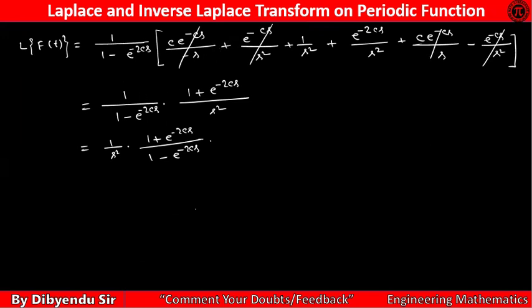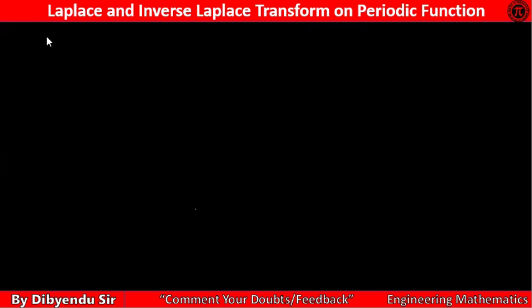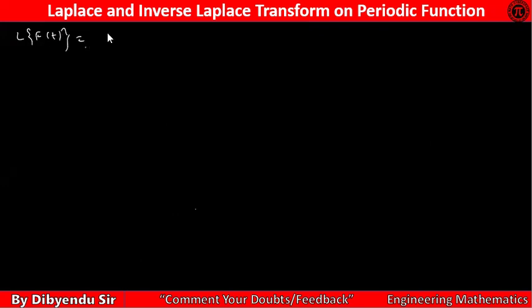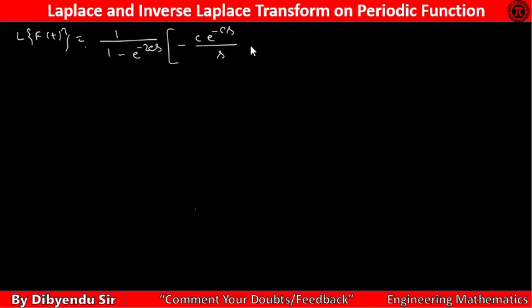So let's solve this part properly. The Laplace of f(t) equals one divided by one minus e to the power minus 2cs, into the first integration part: minus c·e to the power minus cs divided by s, minus e to the power minus cs divided by s², plus one by s².